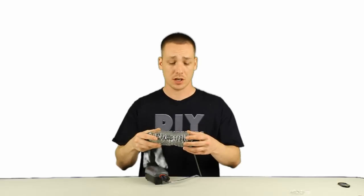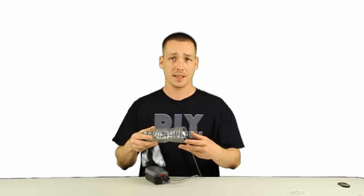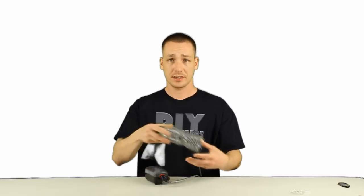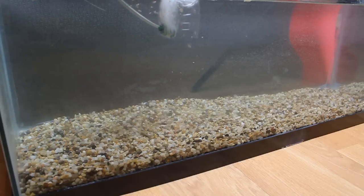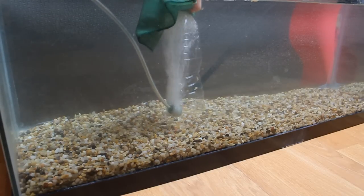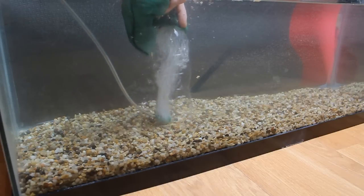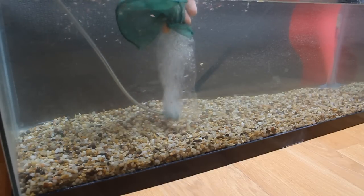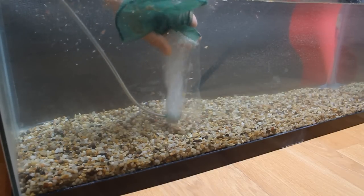However, in doing so, it's also going to suck up any debris that's accumulated underneath the bottle as you're going along your tank. You can do this with gravel, sand, or even a bare bottom aquarium. As that debris travels up the bottle and out the neck, it gets trapped in this bag. However, you don't remove any water in doing so. So that's the great part about it.